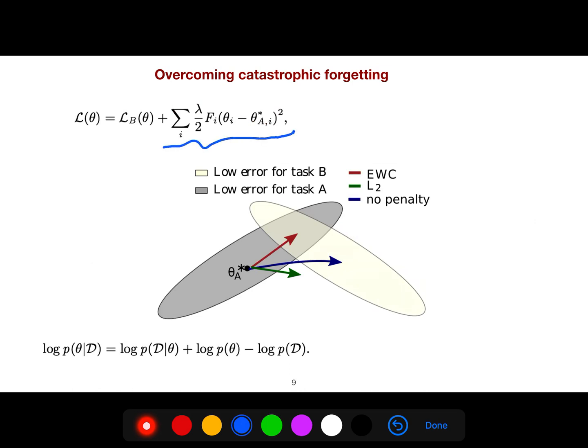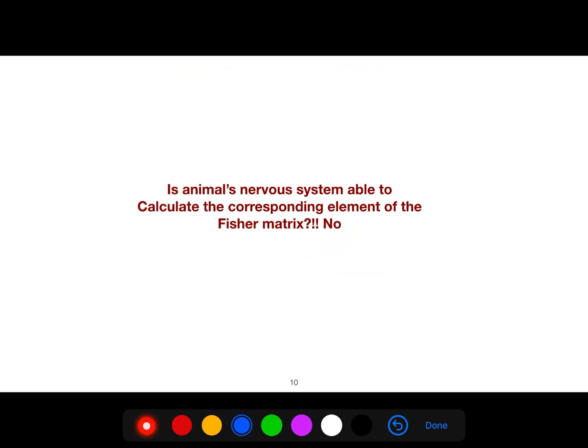So we try to fix your previous task, and then you don't want to change, to move your weights of neural networks or whatever too much. So you try to minimize this error as much as possible. But the problem is, is an animal's nervous system able to calculate the corresponding element of the Fisher matrix? No.